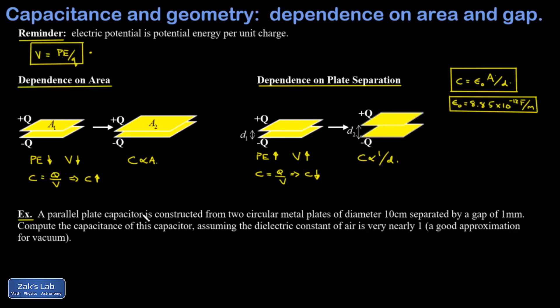Let's wrap things up with a quick example. I have a parallel plate capacitor constructed from two circular metal plates of diameter 10 centimeters separated by a gap of one millimeter, and I want to compute the capacitance of this thing. And I said assuming the dielectric constant of air is very nearly one, a good approximation for vacuum.